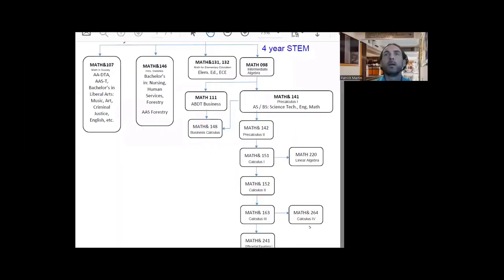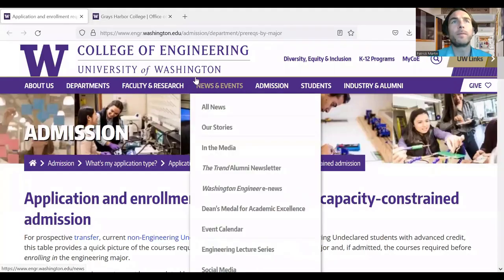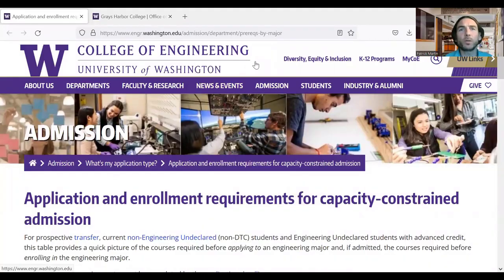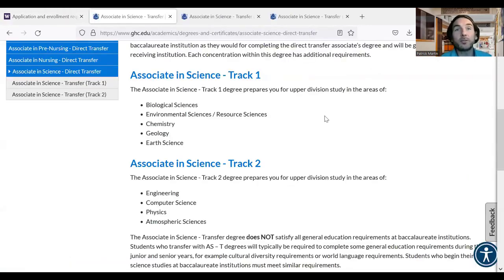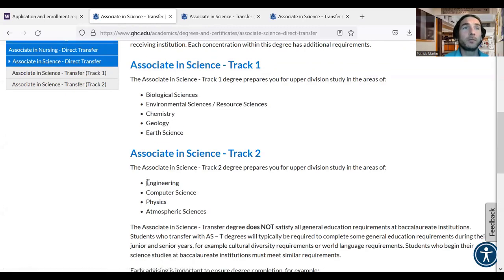For a STEM degree, you will probably need Calculus 2 or Calculus 3. STEM means science, technology, engineering, or math. For example, engineering degrees at the University of Washington require Calculus 3. Their Math 126 is equivalent to our Math 163 Calculus 3. Speaking of STEM degrees, our Associate in Science transfer degrees will set you up for a smooth transfer to the third year of a bachelor's program. Associate in Science Track 1 prepares you for these areas; Associate in Science Track 2 for these areas.